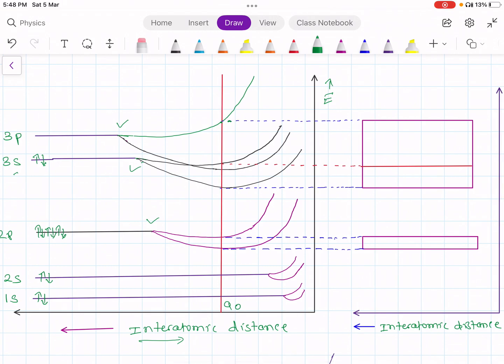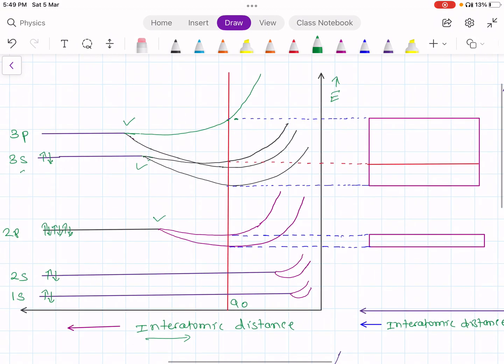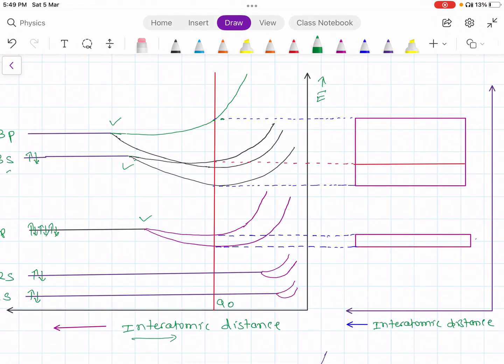And you can here clearly see that at interatomic distance, this 1s and 2s are not splitting at all. Because they are shielded by 2p, 3s and 3p energy levels. So they may not split at all at interatomic distance. So we got here again, this is a 2p band here.